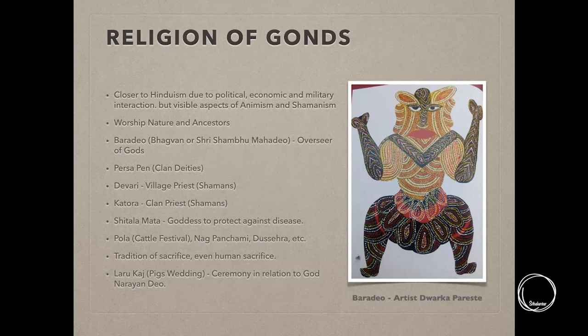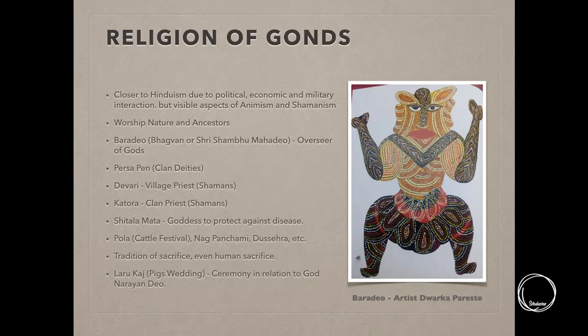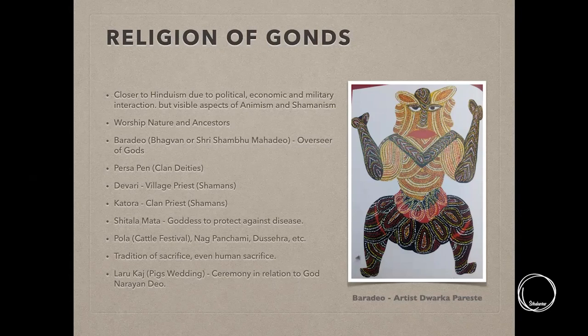They also have shamanism. If there's a shaman for a particular village, he is called 'Devri'; if there's a shaman for the entire clan, he is called 'Katora'. Sheetala Mata is one of the deities they worship a lot — she is a deity to protect against diseases. Festivals they follow include Pola, which is a cattle festival, Nag Panchami, Dussehra, and Holi. There also used to be an extensive practice of sacrifice — from animal sacrifice to even instances of human sacrifice. Another interesting festival is called Larukaj, which means 'pig's wedding,' a ceremony related to god Nara Dev.